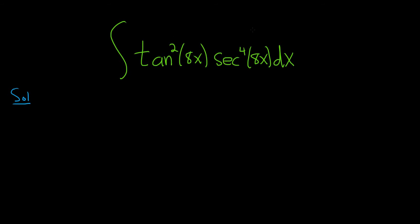Here, our tangent is even, so that's no good. But we do have an even power of secant, so we're going to save a secant squared. Let me show you exactly what I mean by that.